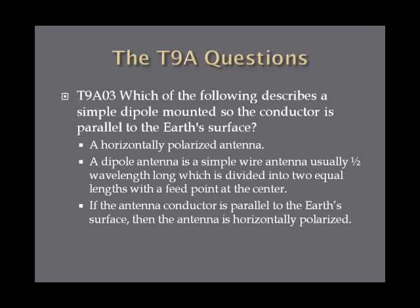If the antenna conductor, or wire, is parallel to the earth's surface, then the antenna is horizontally polarized. So if you know that a dipole antenna is a simple wire antenna, and that wire is horizontal to the earth's surface, then it is horizontally polarized.